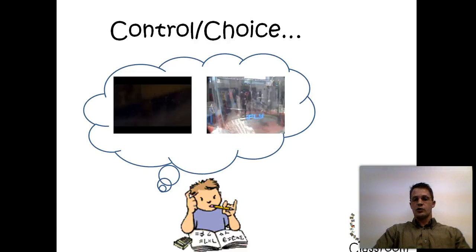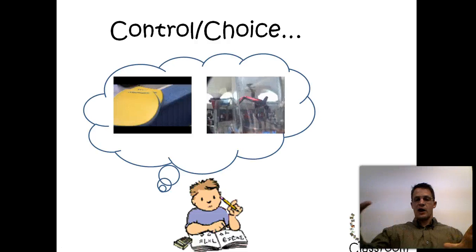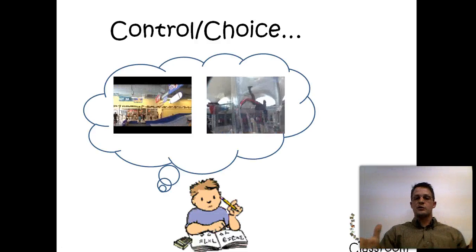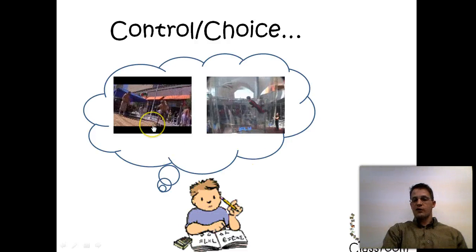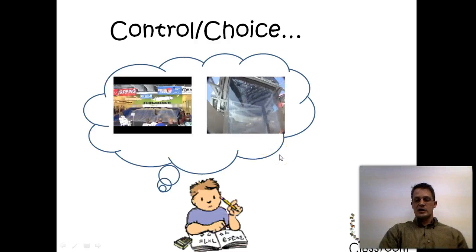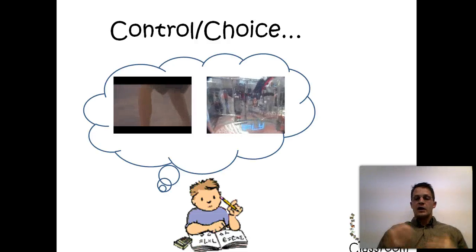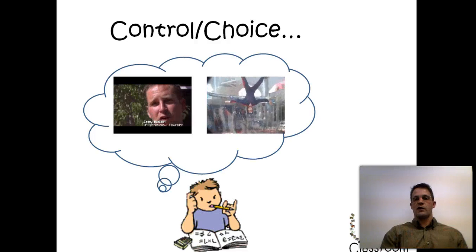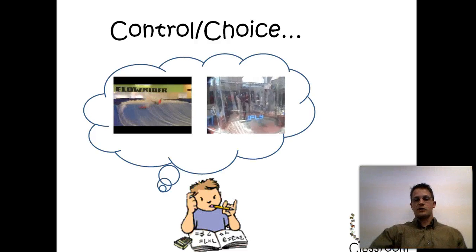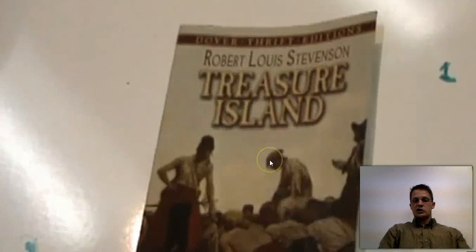Another thing you can do is provide control and choice — that's what video games do. We have kids do similar assignments with reading practice, writing prompts, and creative stuff, where we looked at two different amusement park rides: the Flowrider, a stationary surfing wave, and a stationary skydiving chamber. The kids have similar assignments but get to choose between the two. Kids enjoy video games because there's often choice involved — so as much as we can allow kids to have control and choice, that motivates them to do more.